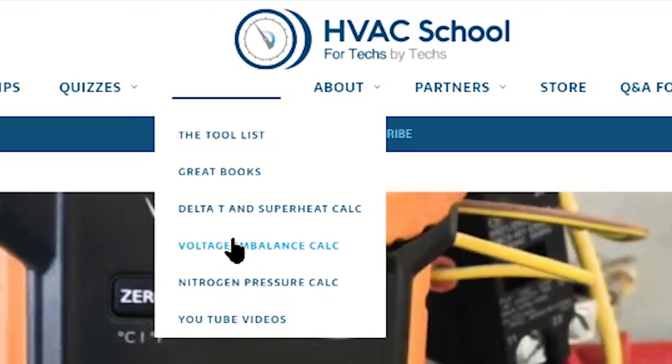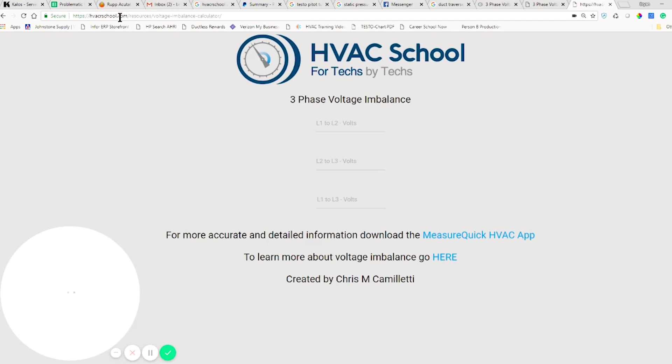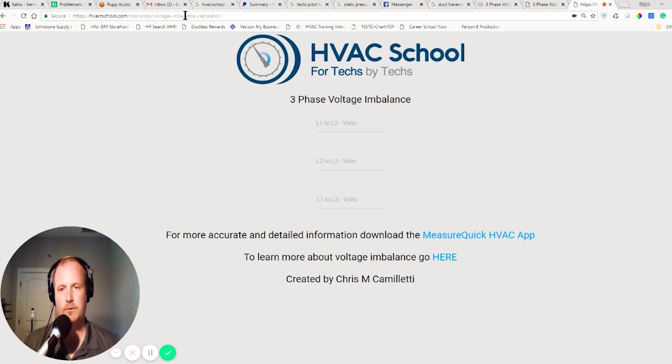This is also available on the mobile version, but it requires that you click a little tiny arrow—I'm going to work on making that a little easier. Then it'll pull this out open and you can see it's hvacschool.com/resources/voltage-imbalance-calculator, which is tricky because you got some dashes in there too. I should probably make an easier link.